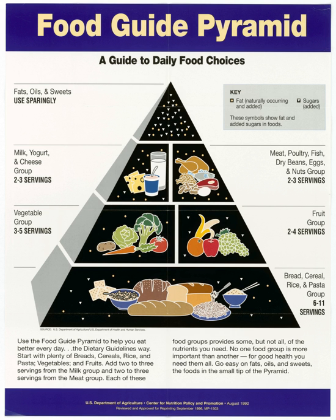Research into food choice investigates how people select the food they eat. An interdisciplinary topic, food choice comprises psychological and sociological aspects including food politics and phenomena such as vegetarianism or religious dietary laws, economic issues, and sensory aspects such as the study of the organoleptic qualities of food.